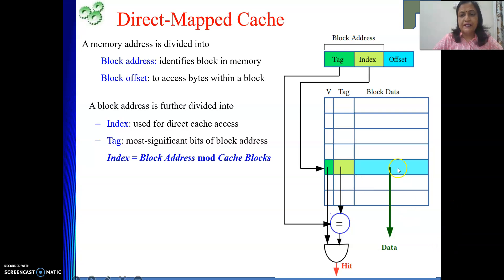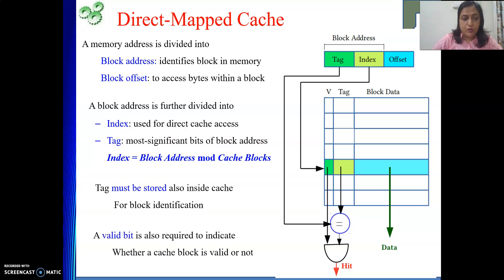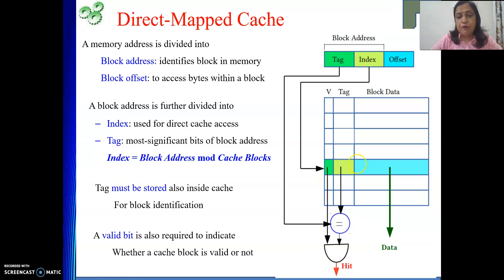If it is a hit, we get the data from the data block. The block address is further divided into index and tag. The index is obtained as block address modulo number of blocks in the cache. The tag must also be stored along with your data inside the block, along with the valid bit. A valid bit is required to indicate whether the cache block is valid or not. To conclude a hit, the valid bit must be 1 for the block, apart from tag matching.